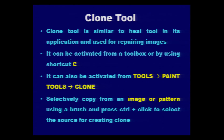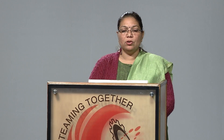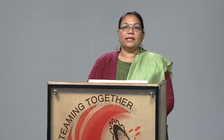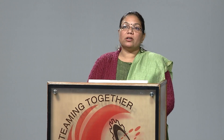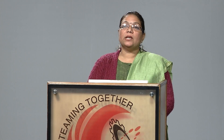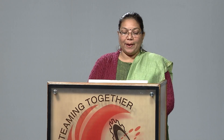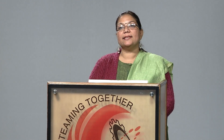The next tool is clone tool, which is similar to the heal tool or healing tool found in Photoshop image editing software. We can make use of these tools for repairing or retouching images. This tool can be activated from the GIMP toolbox using the shortcut key capital C. It can also be activated from the tools menu under paint tools. It is used for selectively copying from an image or pattern using a brush, and the source pixel color can be picked by pressing Control and clicking.